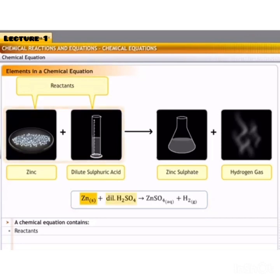And the products, which are always written on the right hand side. As in this reaction, zinc sulphate and hydrogen gas are products, which are formed after the reaction. They are called products.